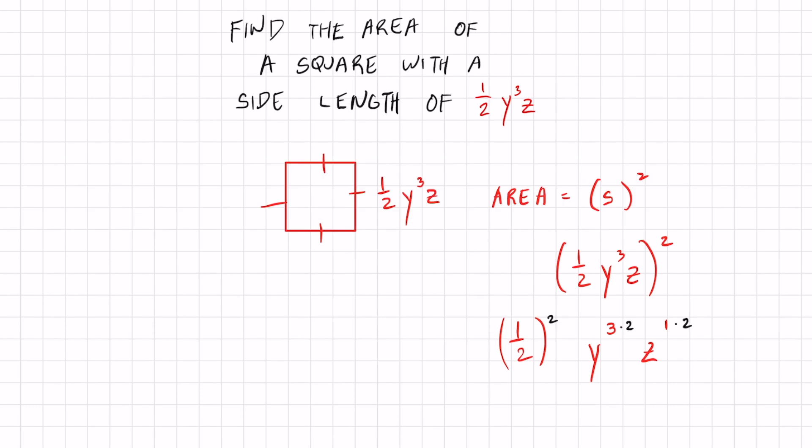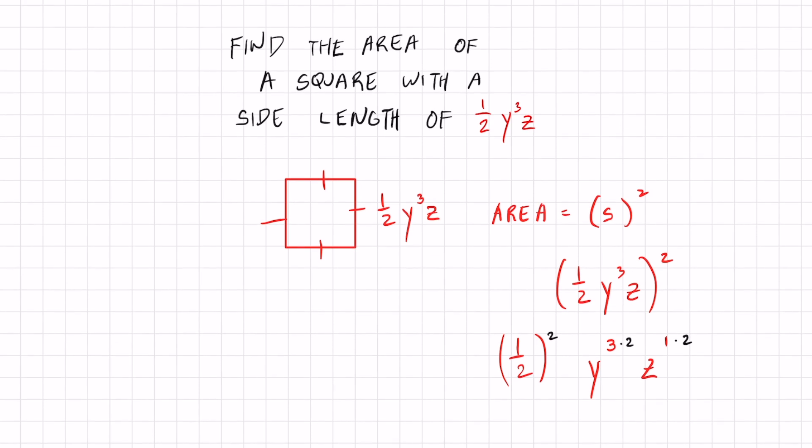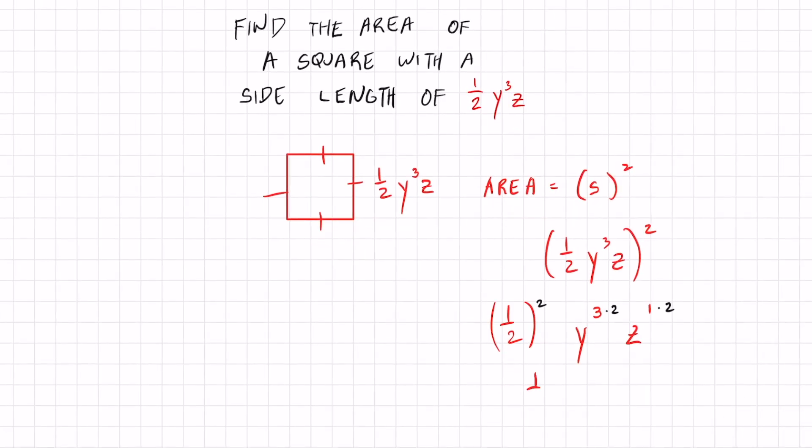Now I just got to simplify and I got the area of my square. One half squared is one fourth. y will now have a power of six because three times two is six and z squared. There is my area.